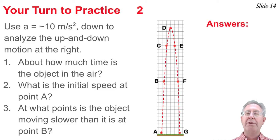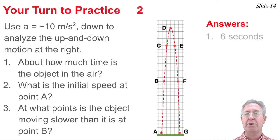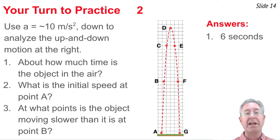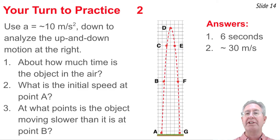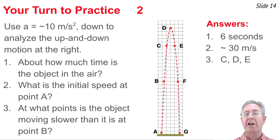Counting the dots: it takes three seconds to rise to point D and three seconds to fall back to point G, so the ball is in the air for six seconds. For the initial speed at point A: point D is the highest point reached in three seconds, and the object loses 10 meters per second each second, so it must have started with 30 meters per second upwards. For points where the object moves slower than at point B: since speed is smaller at higher positions, the answer is points C, D, and E.